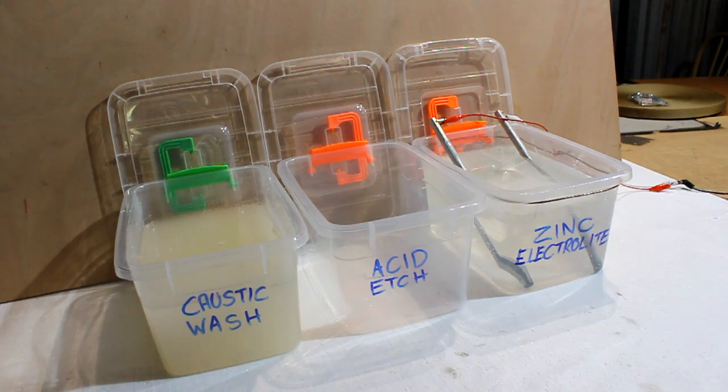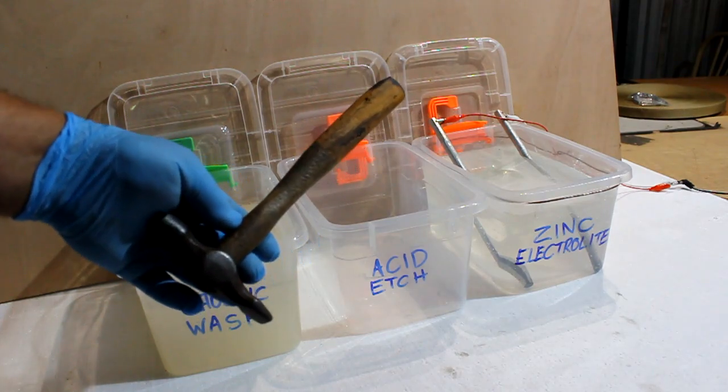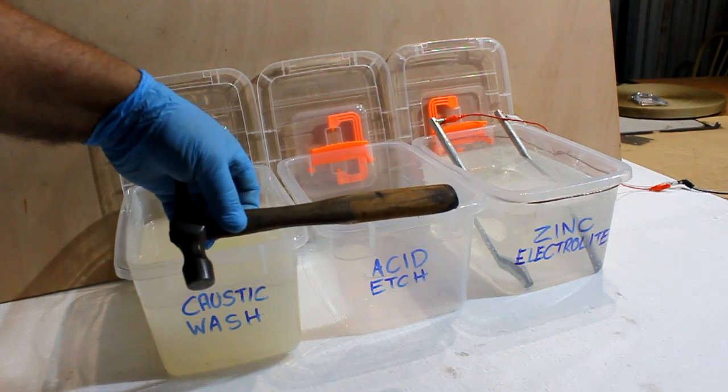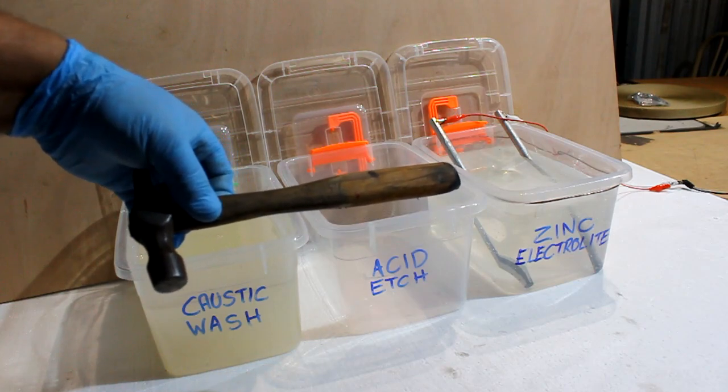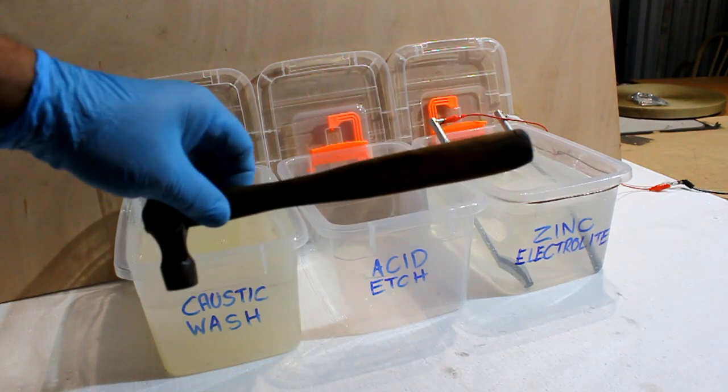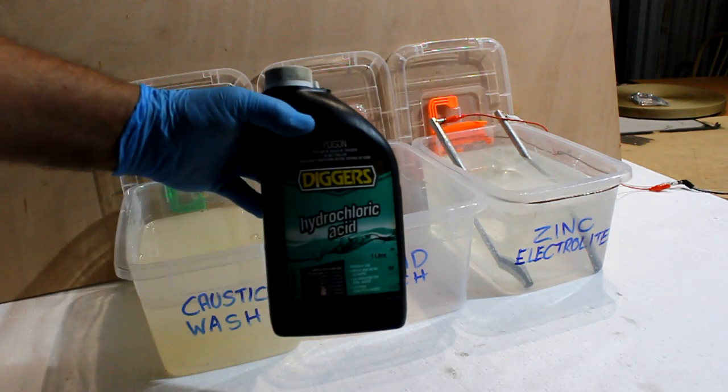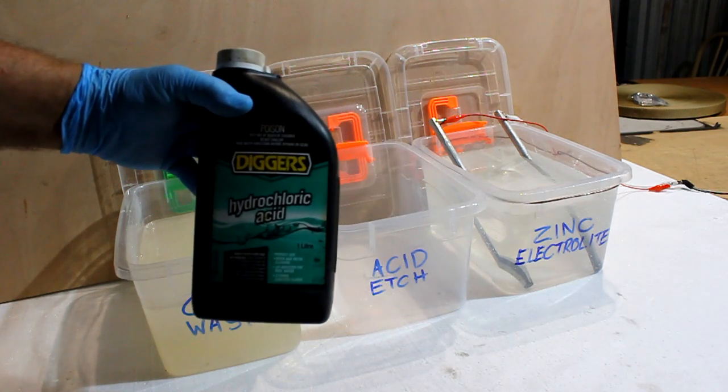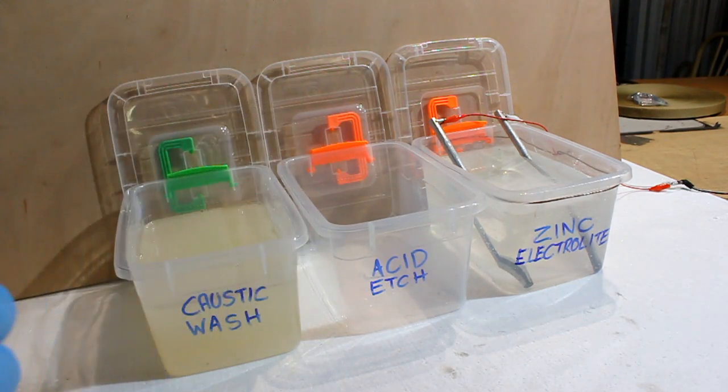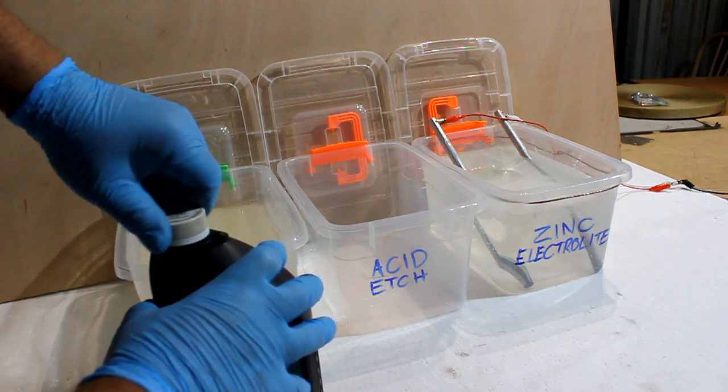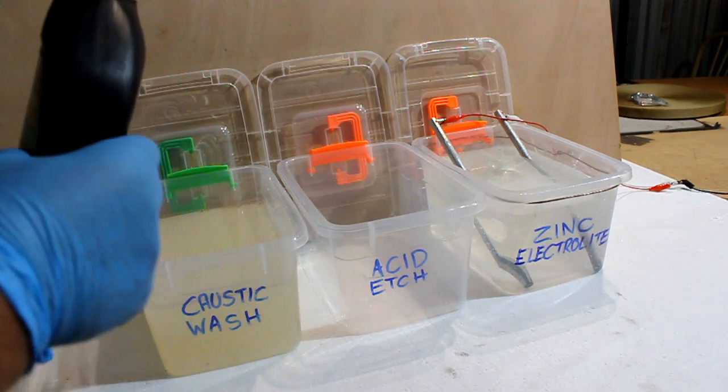To give you some idea of how effective the caustic wash is, this is a greasy and oily hammer and you can plainly see where just a few seconds of stirring has stripped the years of filth off the hammer handle. The next thing we're going to do is add the hydrochloric acid etch. This is extremely dangerous, extremely toxic and must only be used with adequate ventilation.